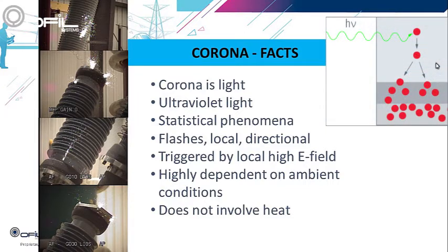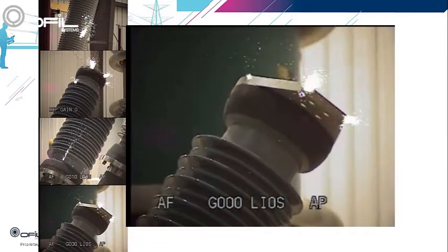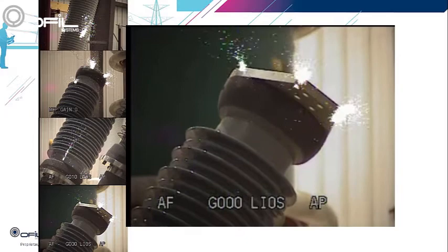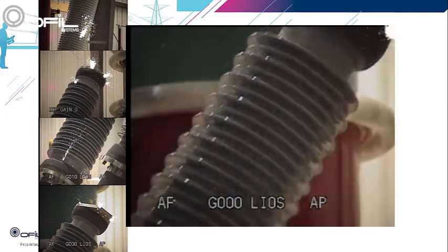Corona is a statistical phenomenon. It involves quantum chemistry, ionization, and recombination processes. The discharge must get started by either cosmic radiation or by an electron that has detached from negative ions during previous discharges that are still present. Corona flashes — it is local and directional, triggered by a locally sufficiently high electrical field of at least 3 kV per millimeter.